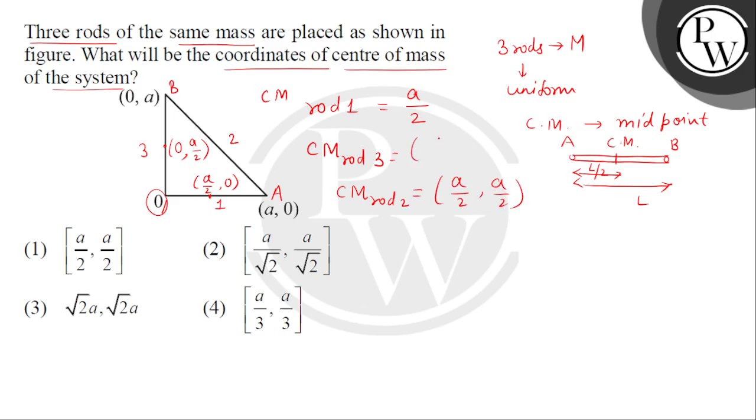Aur 3 ka kya mila tha? 0, A by 2. And rod 1 ka, agar hum x, y coordinate likhay. Toh this is A by 2, 0.